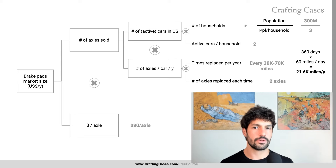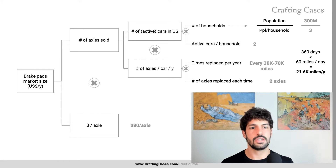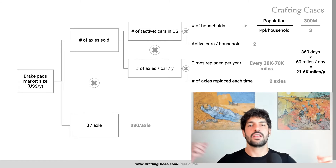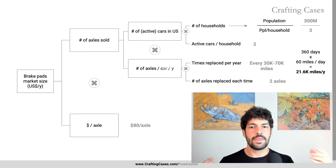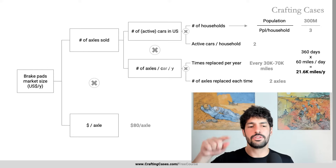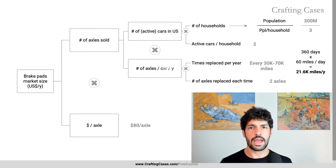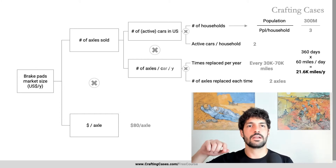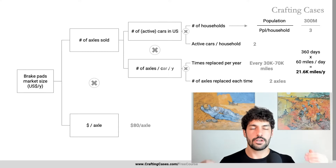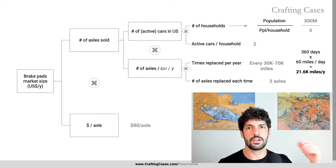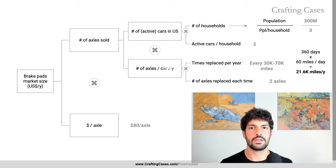Many people think that when you're doing calculations in case interviews, interviewers want to see if you're a math genius who can divide by 7.33 in your mind instantly. I cannot emphasize enough — that is not the case. They really just want to see if you're number fluent and can catch your own mistakes. When you're doing the actual consulting job, Excel is going to do most of the math. But you do need to be able to do simple mental math fluently for client conversations.